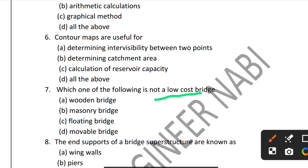Question 7: Which one of the following is not a low-cost bridge? Options: wooden bridge, masonry bridge, floating bridge, movable bridge. Masonry bridge is expensive, so it is not a low-cost bridge. Option B — masonry bridge — is the correct answer.